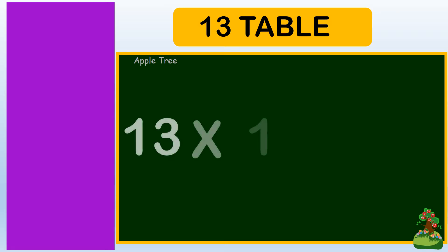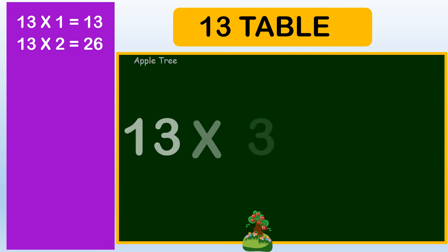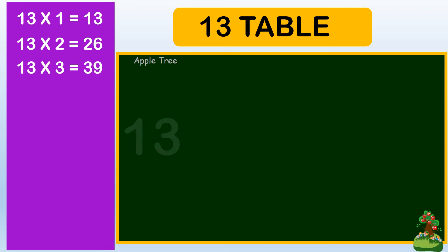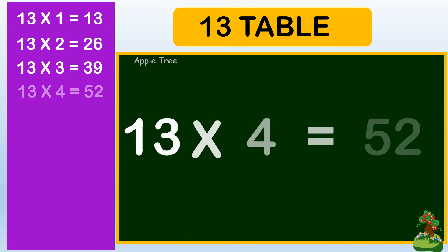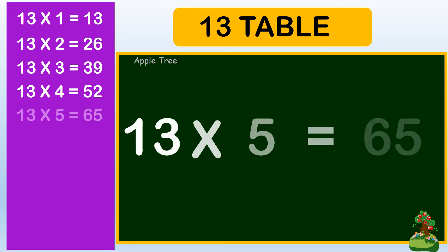13 ones are 13, 13 twos are 26, 13 threes are 39, 13 fours are 52, 13 fives are 65,